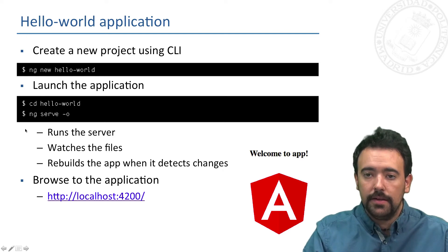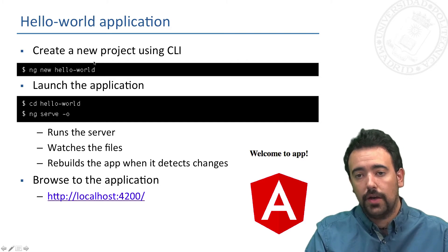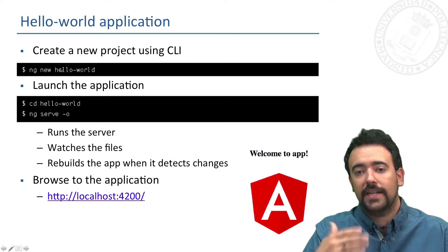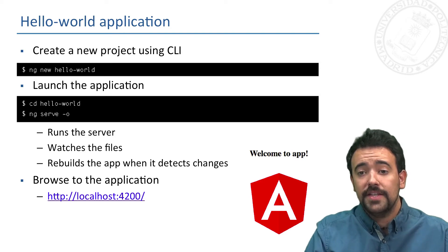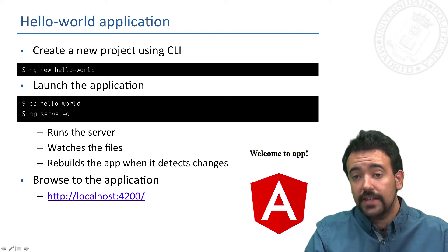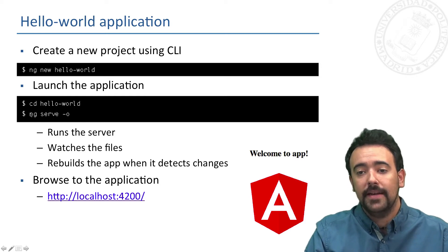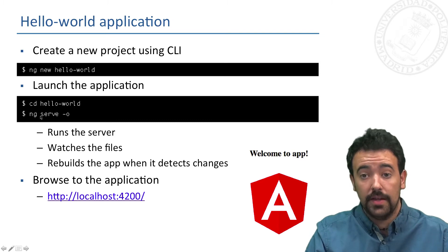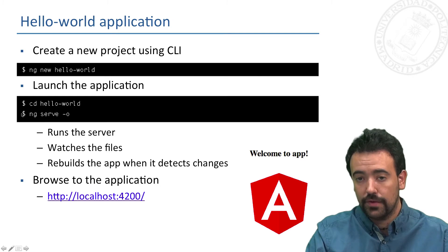Just by typing in the shell the basic command ng new and the name of the project we want to create, Angular will execute a set of orders and generate a new folder with the same name as the project. We can then enter that folder and execute ng serve for starting the server and the sample application Angular creates for us.